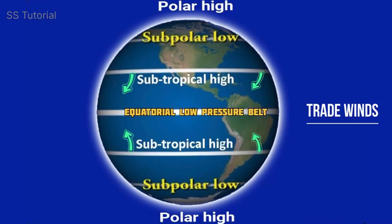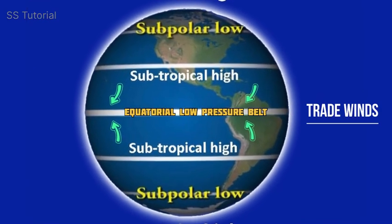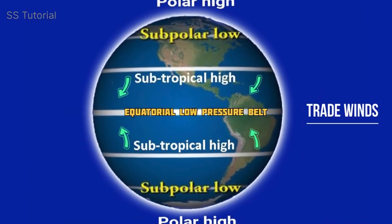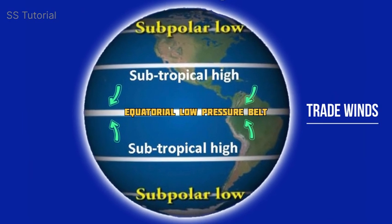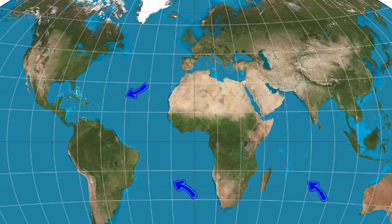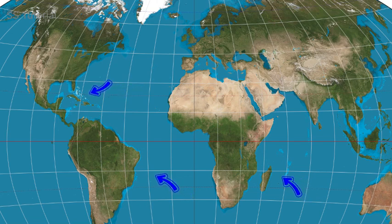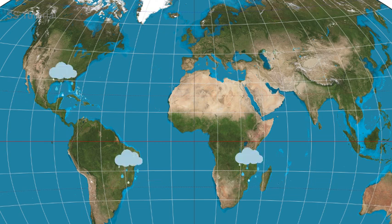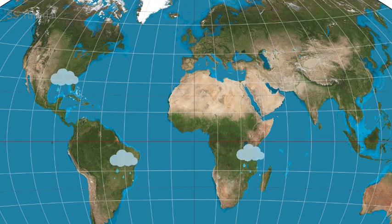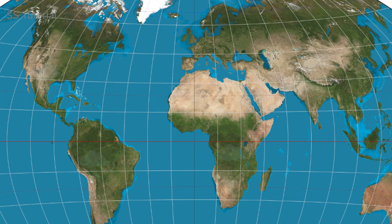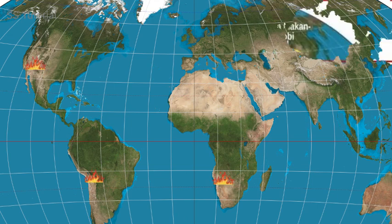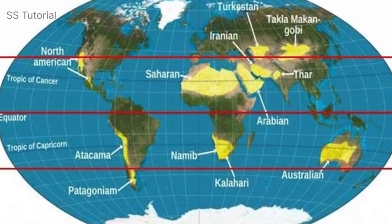Due to Earth's rotation and the Coriolis effect, trade winds are deflected towards the west in both hemispheres — blowing from northeast to southwest in the northern hemisphere and from southeast to northwest in the southern hemisphere. When trade winds move across the ocean, they capture moisture, and when they reach the eastern coast of the continent, huge amounts of rain occur. Trade winds release their maximum moisture on the eastern side, so when they reach the western side, little or no moisture remains — making rain very hard and maximizing aridity, which leads to desert formation on the western side.